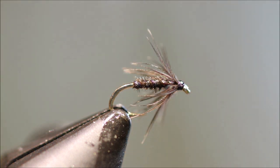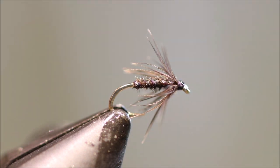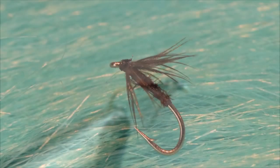There you go. Spring Black. Very effective little fly. Tie some up. Catch some fish on them. I hope you enjoyed the video. If you did, please give me a thumbs up below and subscribe to the channel. Tight lines guys. Bye.